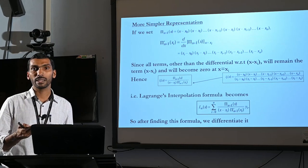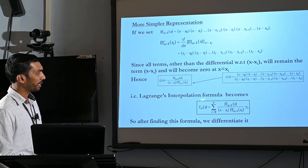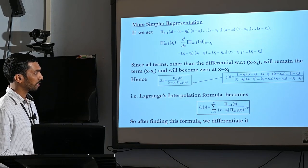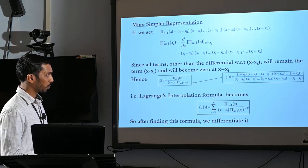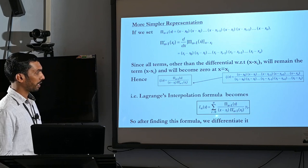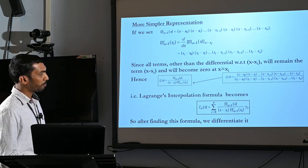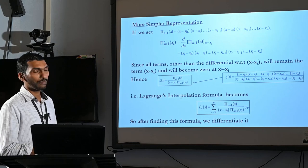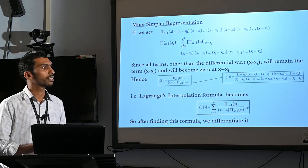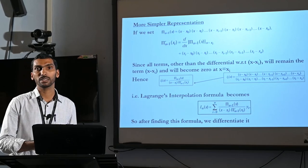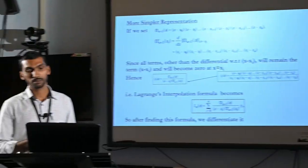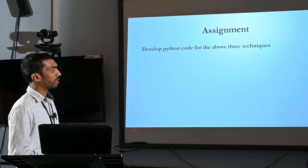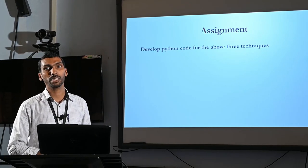Summing all these Lagrangian polynomials, we get the final interpolation polynomial: Ln(x) equals summation i equals 0 to n of pi_{n+1}(x) divided by [(x minus xi) times pi'_{n+1}(xi)] times yi. After finding this formula, we differentiate it to get the numerical derivative of the given set of points. Now there is one assignment for you: develop Python code for the above three techniques. Please write this assignment and upload. Thank you.